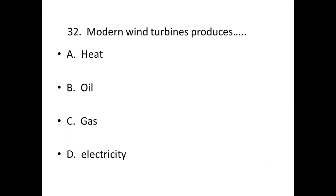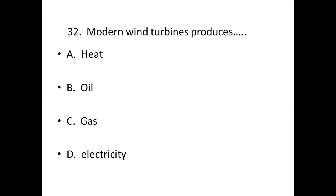32nd bit: Modern wind turbines produce dash. Option A: Heat. Option B: Oil. Option C: Gas. Option D: Electricity. Answer — Option D: Electricity.